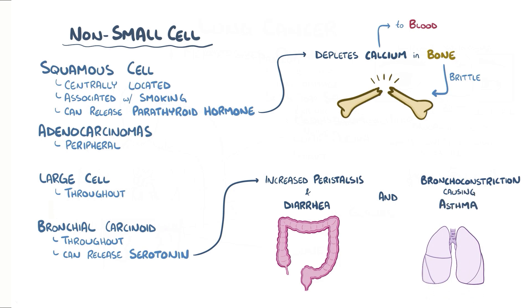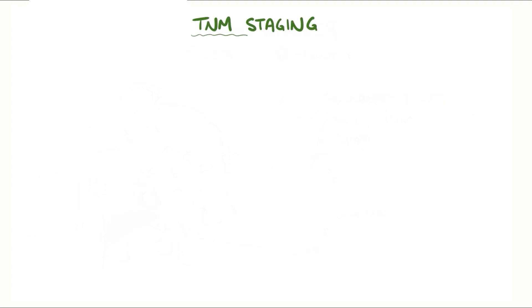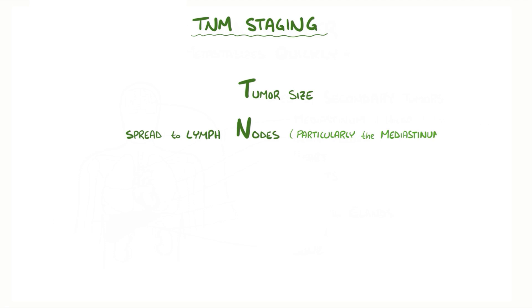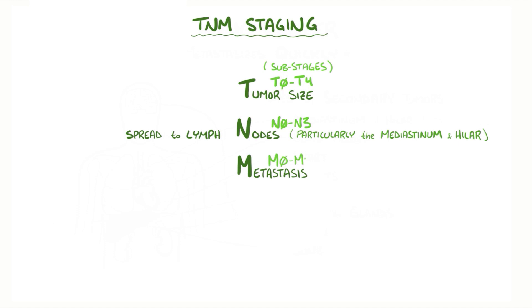While non-small cell carcinomas tend to grow more slowly and spread less rapidly than small cell carcinomas, the staging system is the same for both. It's called TNM staging and represents three diagnostic categories: T for tumor size and extent of local extension, N for spread into nearby lymph nodes in the chest — especially the mediastinum and hilar lymph nodes — and M for metastasis to a secondary site. Within each category are substages: T0–T4, N0–N3, and M0 or M1, where an increasing number means increasing severity.